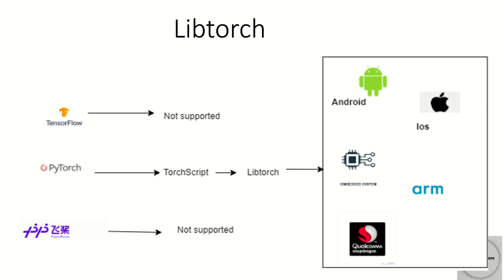We will move on to LibTorch, which is a product of PyTorch. Note that PyTorch within TensorFlow and Paddle Paddle are not currently directly supported; however, they can be supported after doing conversions such as TensorFlow to ONNX, then ONNX to PyTorch, then PyTorch to TorchScript, etc. So we start with a PyTorch model, convert it to TorchScript, and with the help of LibTorch, deploy it to any platform-specific library.